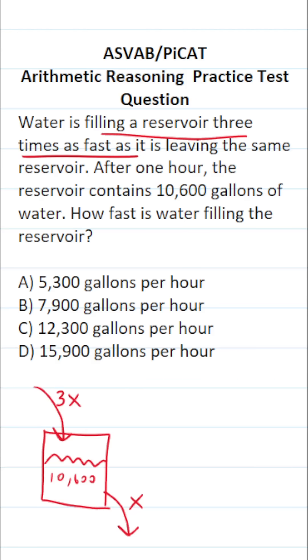Now we can translate these statements to an equation. It's being filled at a rate of 3X gallons per hour minus the X gallons per hour that it's leaving the reservoir. And after one hour, we have 10,600 gallons of water in the tank. This refers to filling. This is leaving. That's going to be important toward the end of the problem.